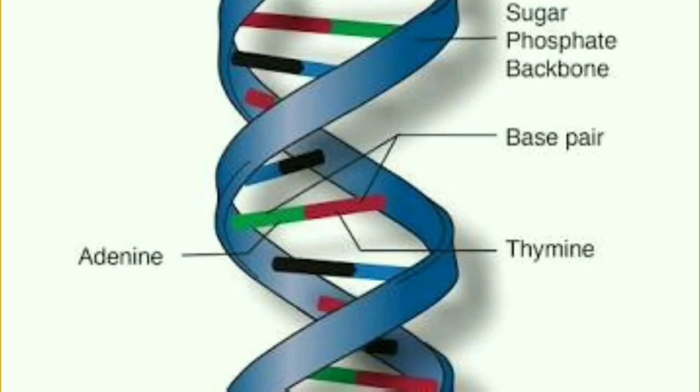This diagram shows the double helical structure of DNA, which resembles a twisted ladder. The sides are made up of the sugar-phosphate backbone, while the steps are made up of base pairs — that is, adenine, thymine, cytosine, and guanine.